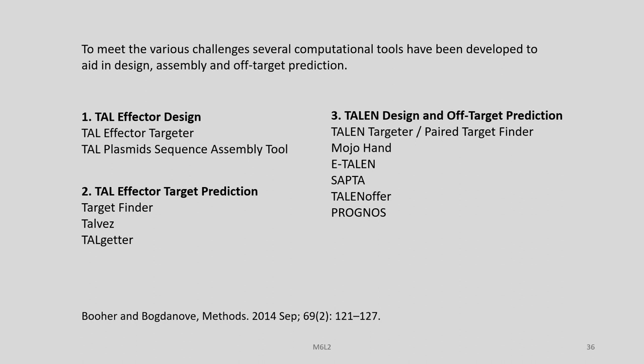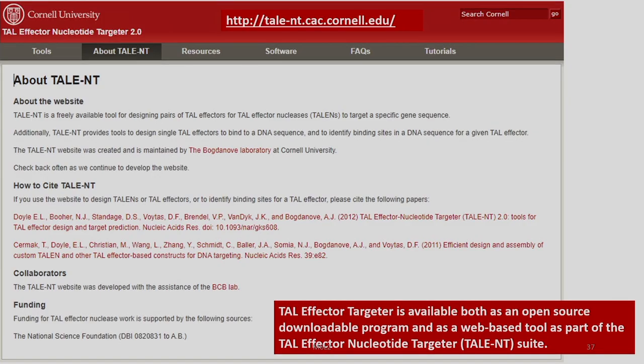The first division consists of softwares used for TAL effector design, with examples being TAL Effector Targeter and TAL Plasmid Sequence Assembly Tool. The second type covers TAL effector target prediction, with tools like Target Finder, TALvej, and TALgetter. The third type is TALEN design and off-target prediction, including TALEN Targeter, Paired Target Finder, MojoHan, eTALEN, SAPTA, TALEN Offer, and Prognose. We will discuss at least one or two tools under each of these three broad categories.